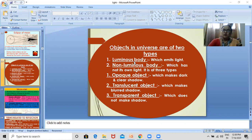Luminous body which emits light like sun, like firefly, which has its own light like stars. Non-luminous body which has not its own light like moon, bulb. These are the different types of objects.